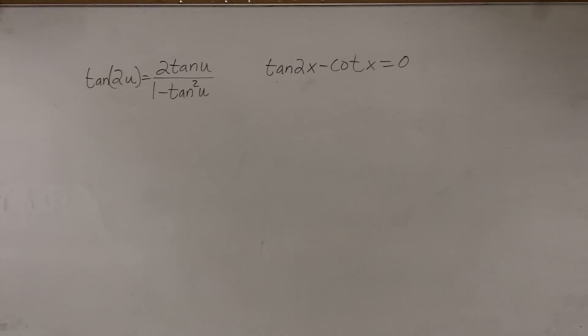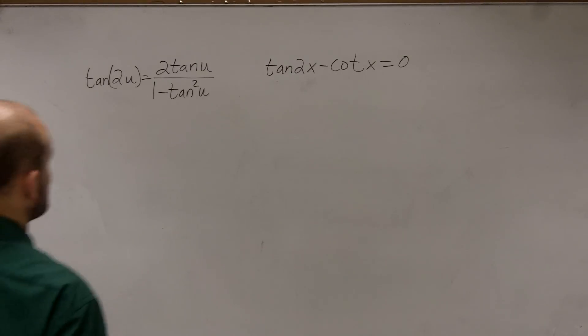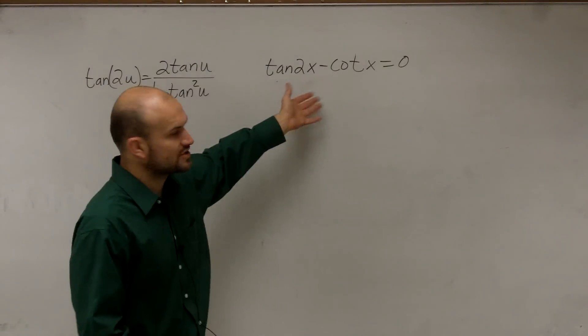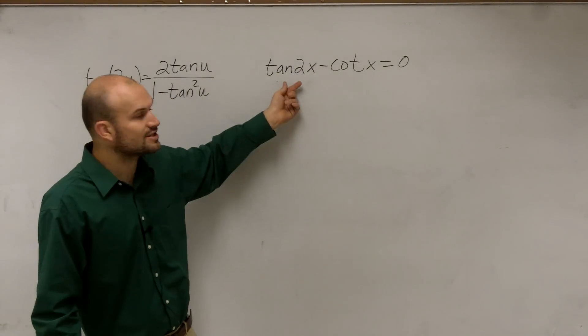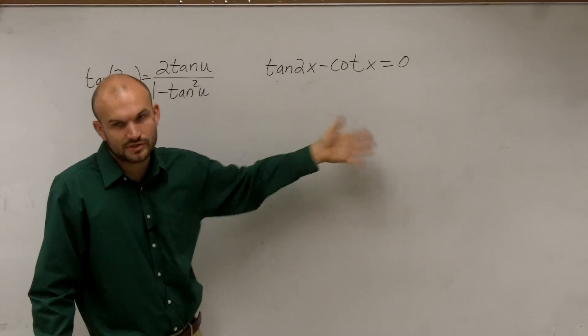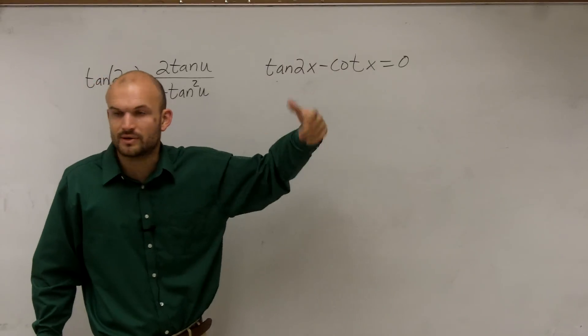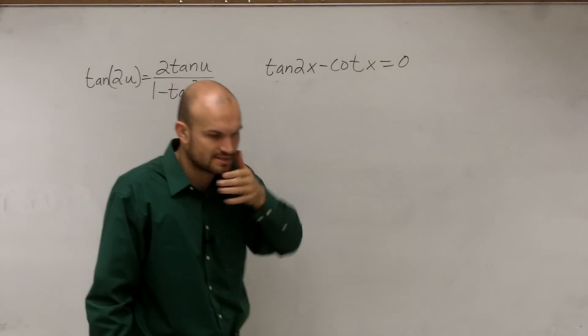We solved for the angle. We had solved for our tangent and cotangent, and then once it was 2x, you divide out the 2 and solve for your x.